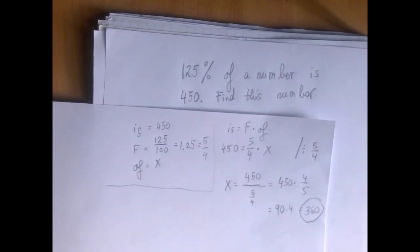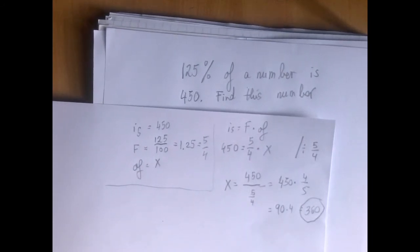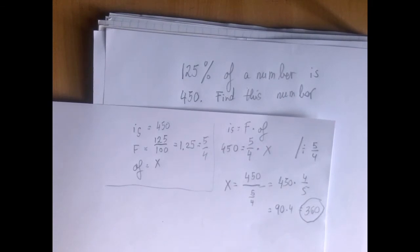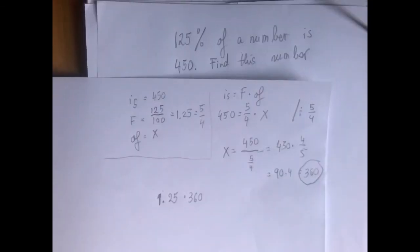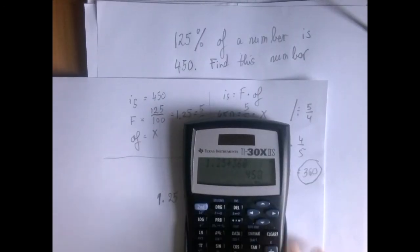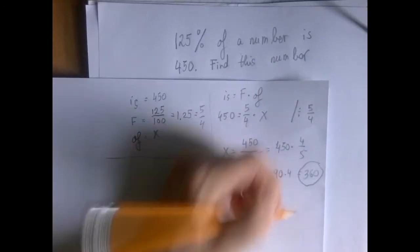Checking is always a type 1 problem. So what happens if we take 360 and we take 125% of it? We should get 450. Now we're going to use the decimal form. And we did get 450. So our answer is correct.